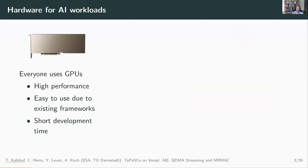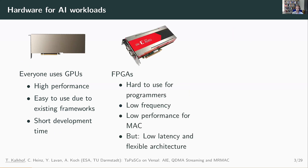Currently, everyone is using GPUs. They provide very high performance, are easy to use due to existing programming frameworks, can be programmed in software, and have quite short development times. On the other hand, we have FPGAs, which are quite hard to use for programmers coming from the software world — you often need HDL or at least knowledge of HLS tools. You achieve relatively low frequencies, a couple of hundred megahertz, and low performance for MAC operations. However, FPGAs provide very low latency and have a very flexible architecture.